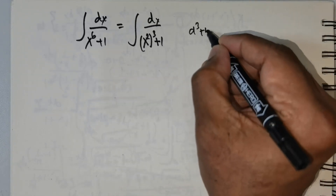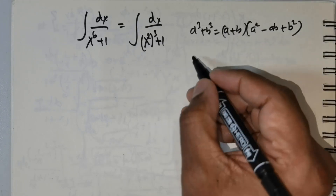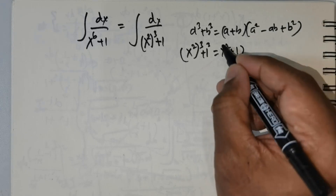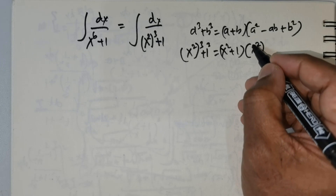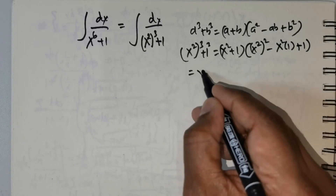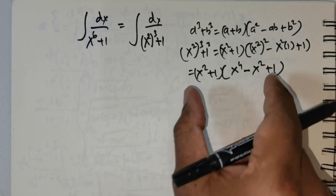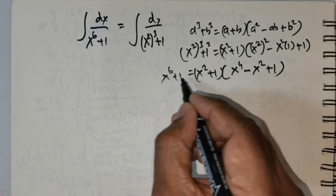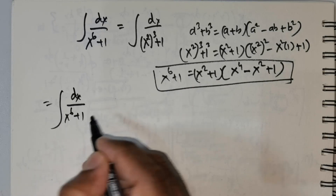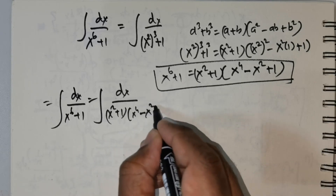Now this is of the form a cubed plus b cubed, which is nothing but a plus b times a squared minus ab plus b squared. So x squared raised to the power of 3 plus 1 cubed is nothing but x squared plus 1 times — in place of a you have x squared, b is 1 — so this gives x squared plus 1 times x to the power of 4 minus x squared plus 1. I need to substitute this in place of x to the power of 6 plus 1, so this equals integral dx divided by x squared plus 1 times x to the power of 4 minus x squared plus 1.